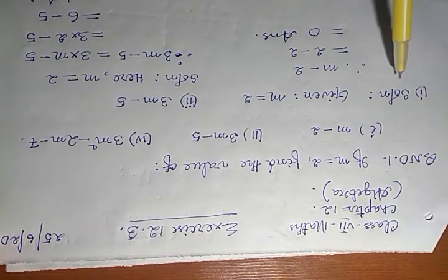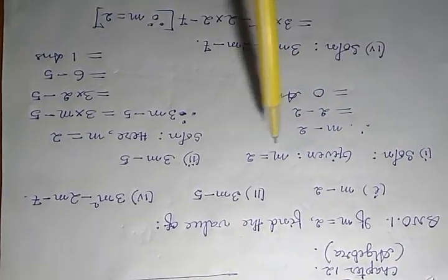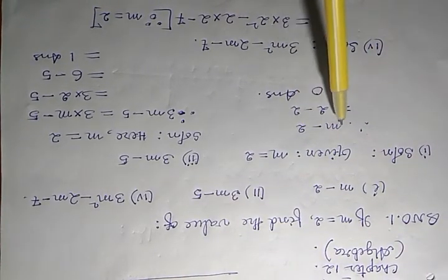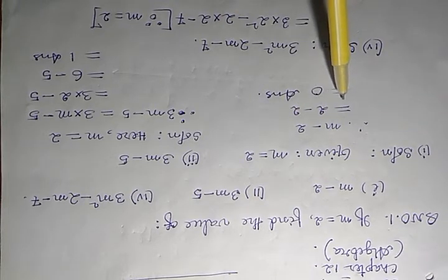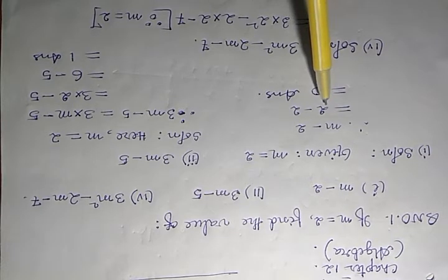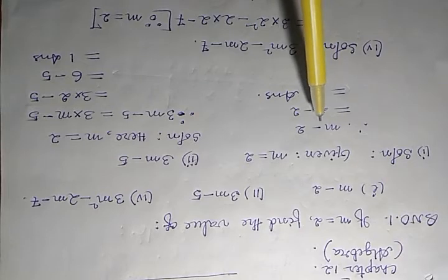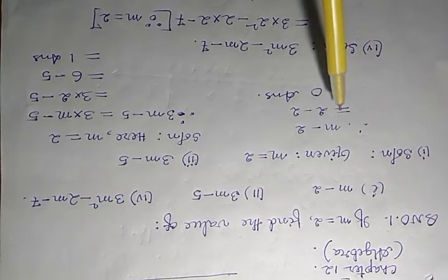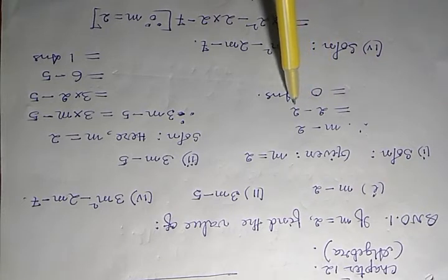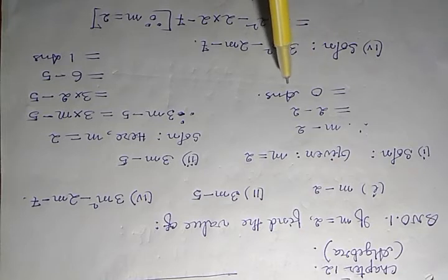Roma number 1 solution. Given m equals 2. Therefore, m minus 2. Substituting the value of m, you write here 2 minus 2. 2 minus 2 equals 0. This is the answer.